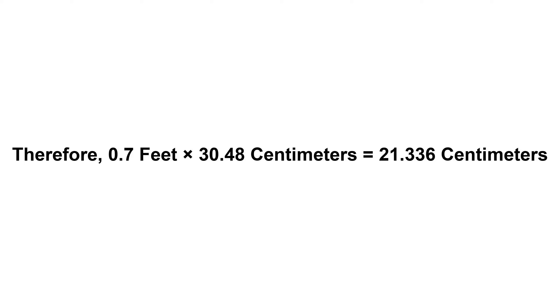Now we have to multiply 30.48 by 0.7. Therefore, 0.7 feet times 30.48 centimetres equals 21.336 centimetres.